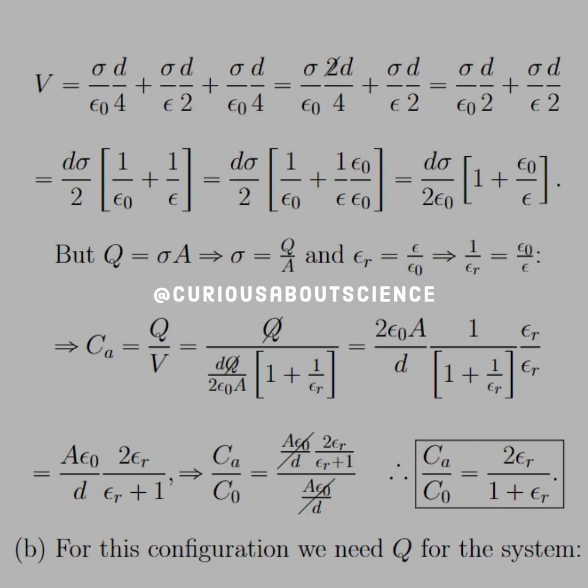To help clean up that denominator, we multiply by epsilon r over epsilon r, and then simplify through, and then after that we can take the ratio of the capacitance for A with the capacitance of the parallel plate capacitor without anything in between it, and we see that the A epsilon naught d cancels, leaving us with a ratio of 2 epsilon r over 1 plus epsilon r.